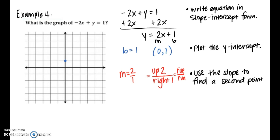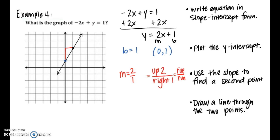The slope is positive 2, written as 2 over 1, meaning rise over run. Starting at the y-intercept, count up two units and right one unit to get the next point. Once that second point is plotted, draw a line through the two points and make sure you put arrows at both ends. This is the basic process for graphing a line in slope-intercept form.